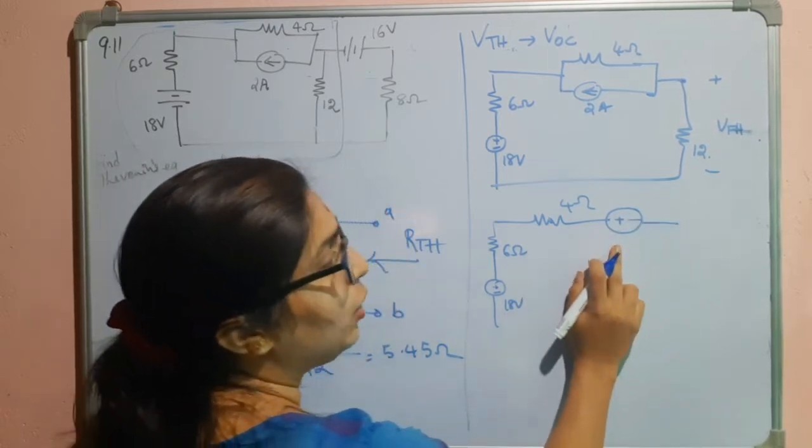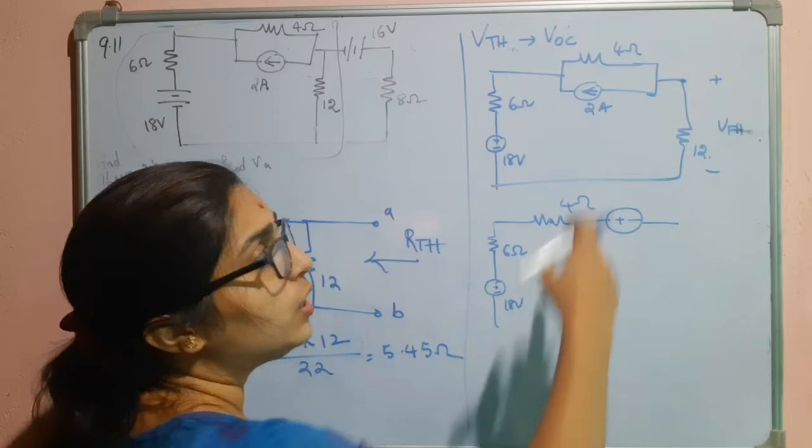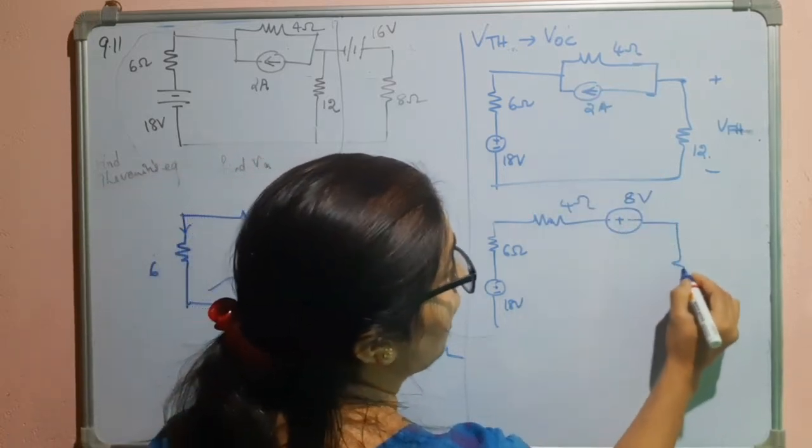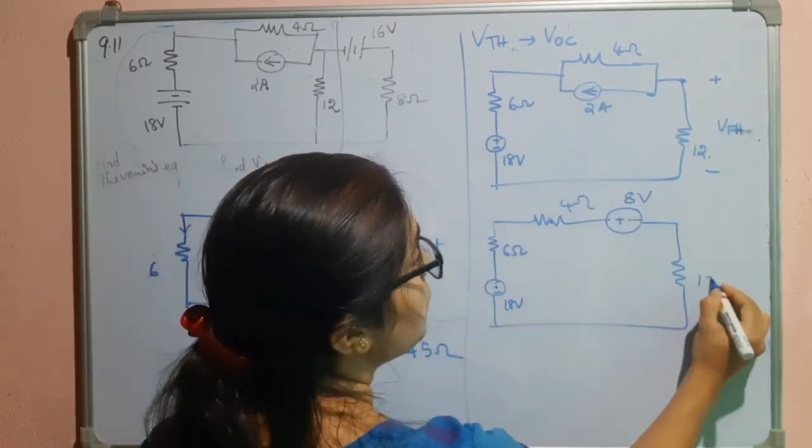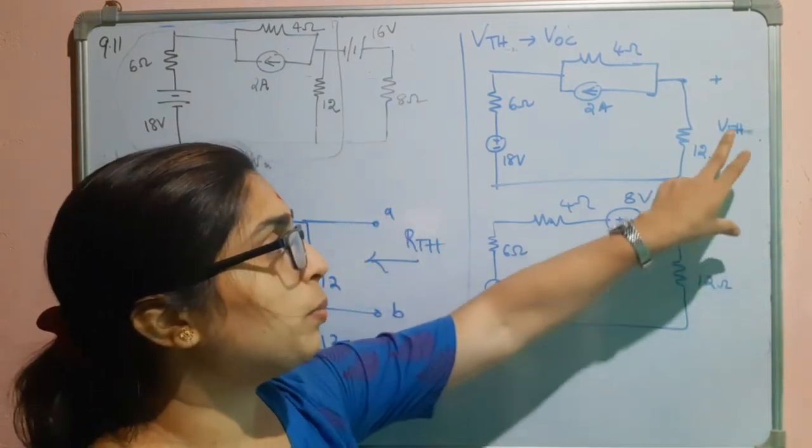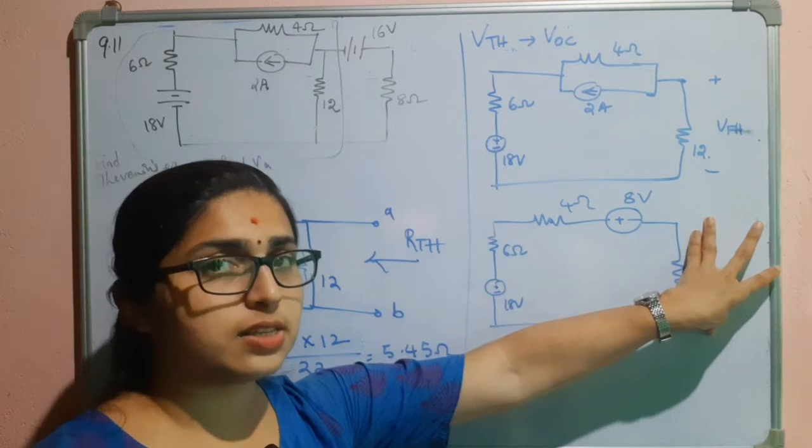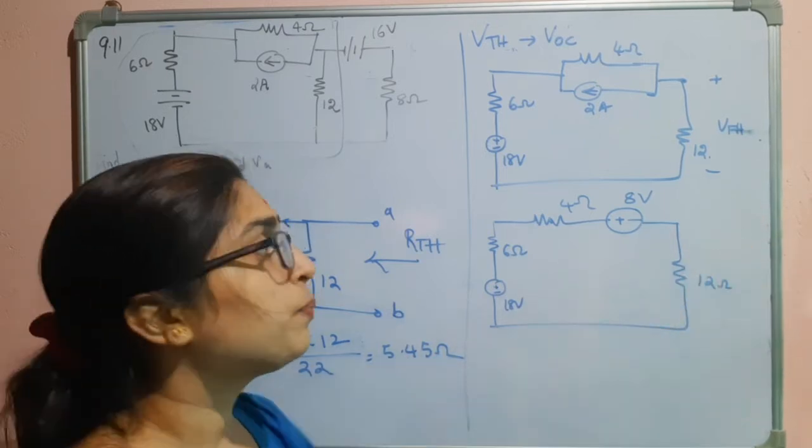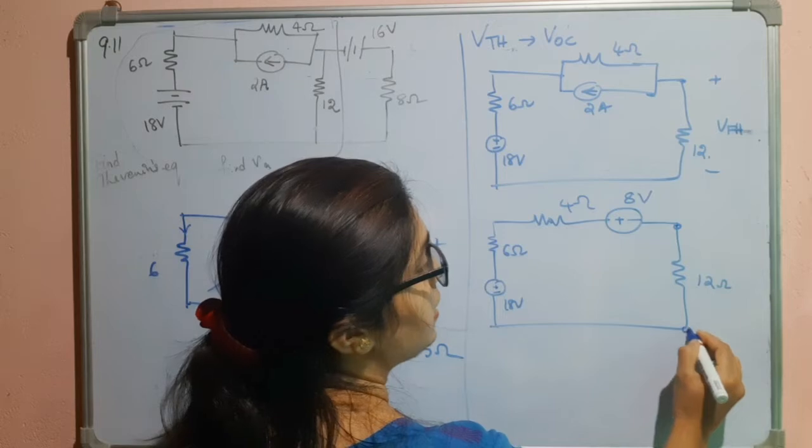So, what will be the value of this? It should be I into R. So, 2 into 4 that is 8 volts and here we have 12 ohms. Since we have to measure this, we will not alter this resistance. We have to measure the voltage across this particular resistance. So, we will not alter that particular branch. So, let us keep this as it is.